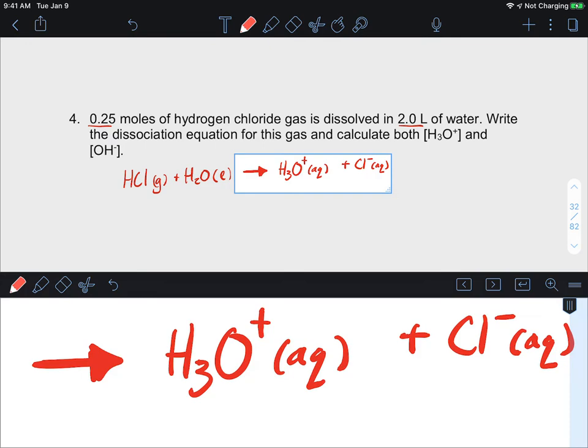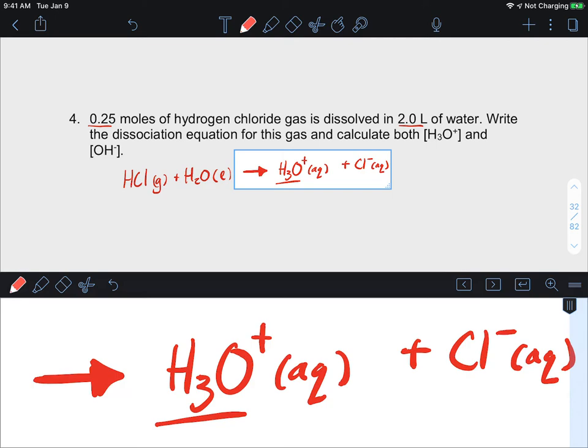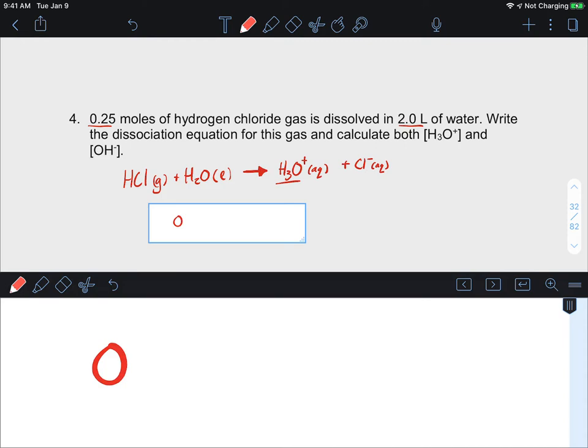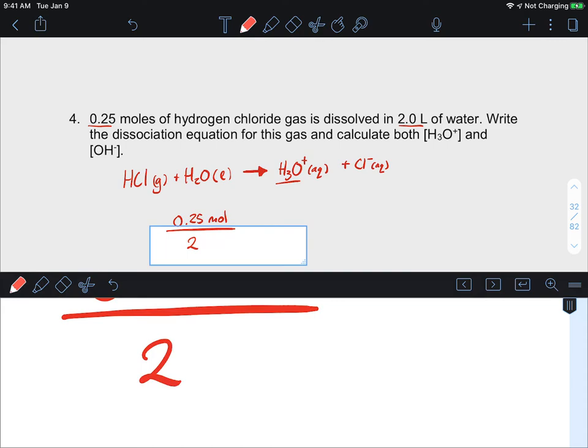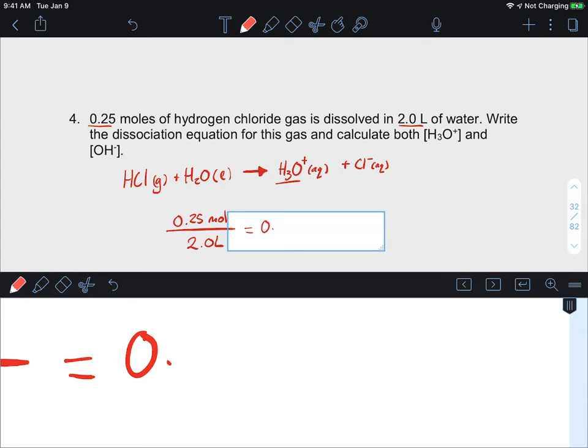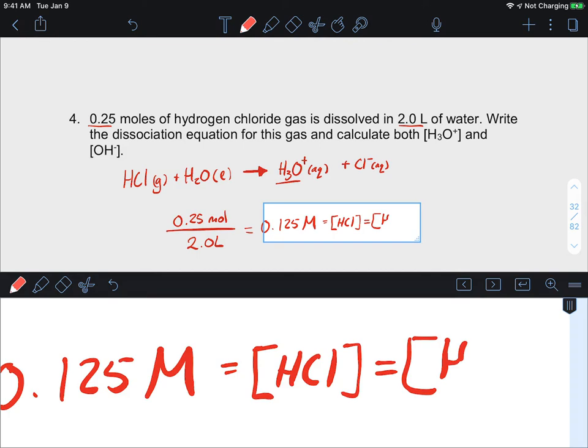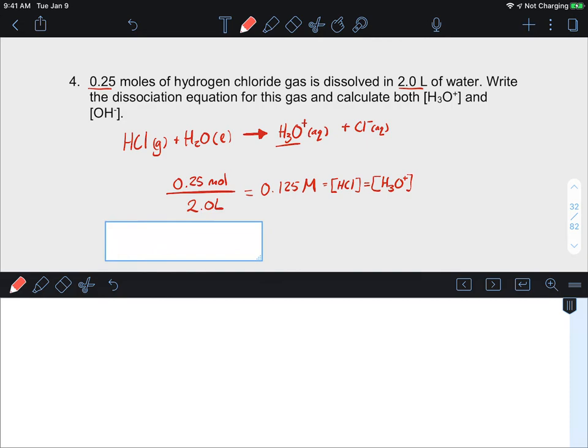We know that this is a strong acid, so we can treat this as a one-directional arrow. There's no equilibrium here. So we can treat the concentration of this HCl in water as the concentration of H3O because it is a one-to-one ratio. So 0.25 moles divided by the two liters is going to give us essentially half, so 0.125 molarity. That's the molarity of HCl, which is the molarity of our H3O plus.